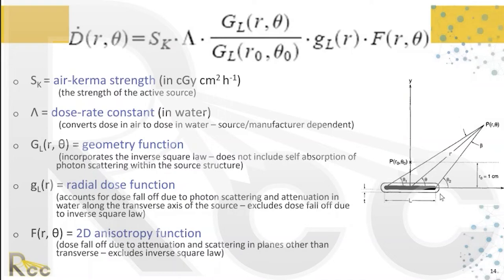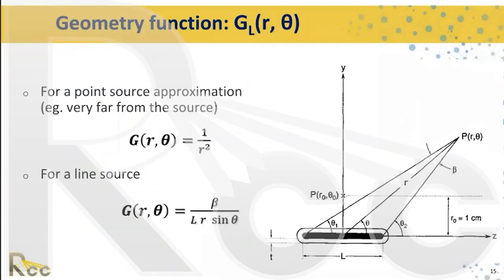The 2D anisotropy function accounts for differences in scattering in different planes based on how the source is built. For a spherical source the anisotropy is one, the same in any direction, whereas cylindrical sources have an anisotropy factor that matters especially when the dose calculation region is close to the source. The geometry function for a point source approximation is essentially the inverse square, but for a line source you also account for the angle subtended at the source.